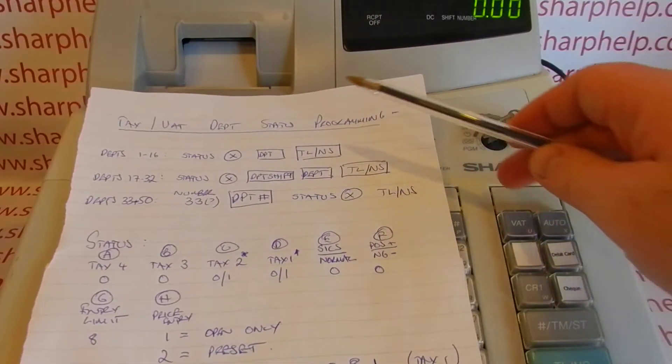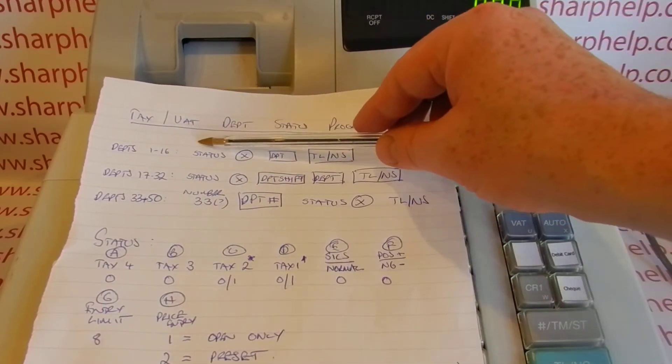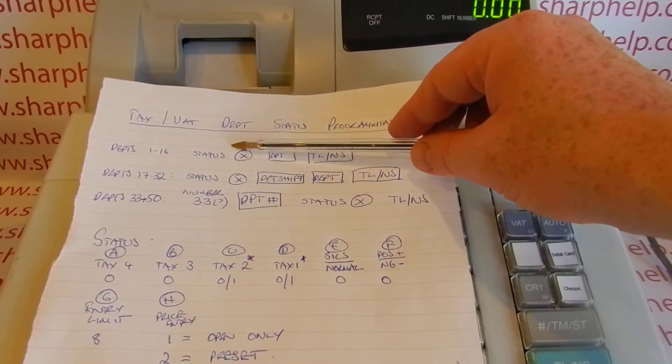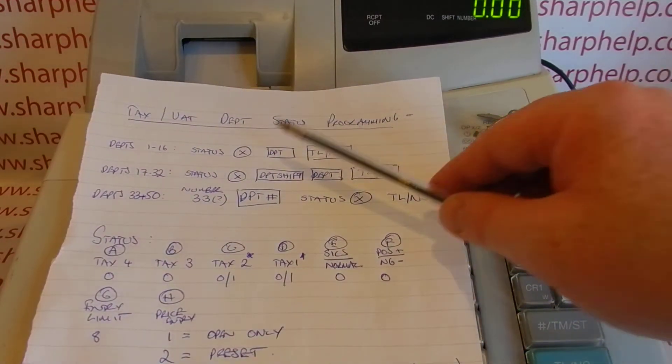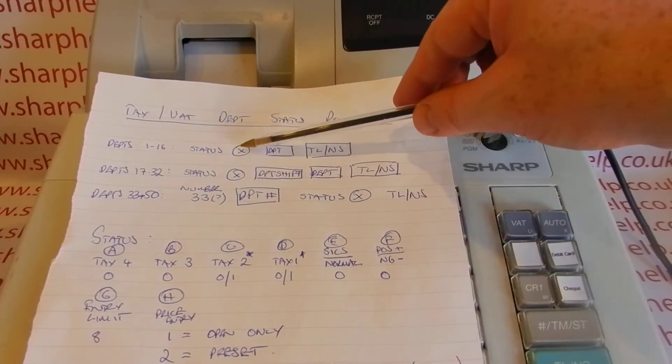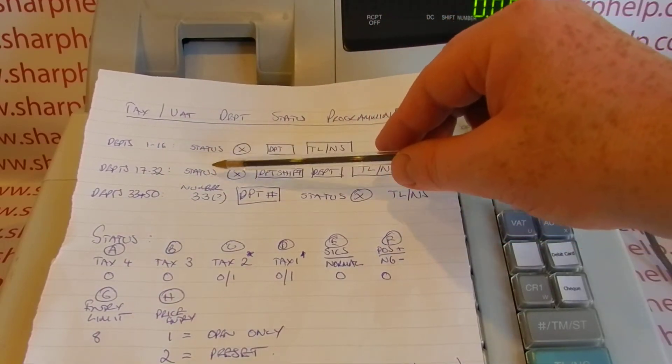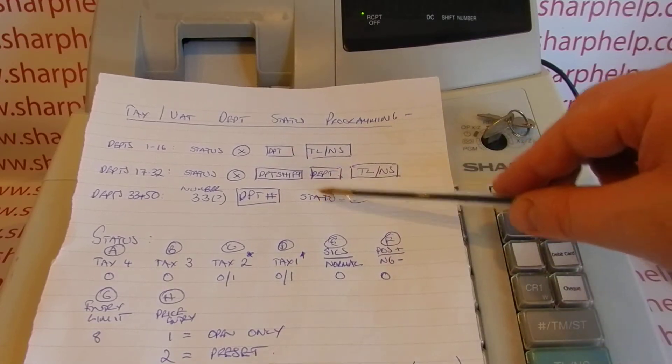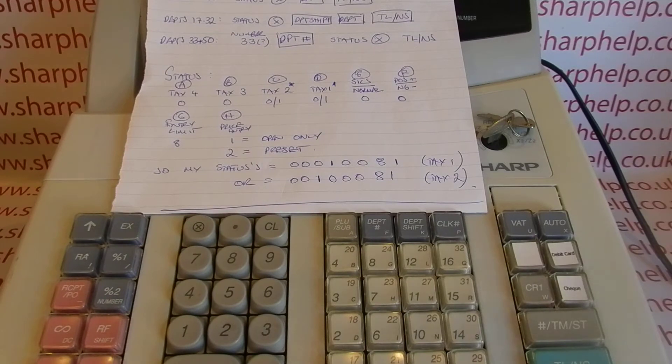This is my crib sheet version of the manual. If you haven't got a copy of the manual, what it says is to enter the programming for departments 1 to 16, you type in a status of eight digits, then you press the multiply button, followed by the department, and then TL/NS. Obviously this bit's fairly straightforward. If you're doing departments 17 to 32 and 33 to 50, the process is slightly different, but you still have to enter the status for the department. A lot of people don't understand what the status is, what all the A, B, C's and everything refers to. It basically refers to a grid or a chart that's on the next page of the manual, page 28.